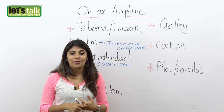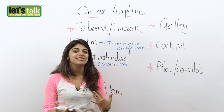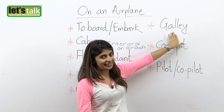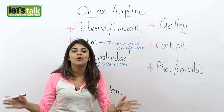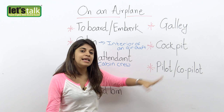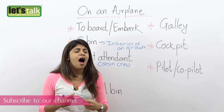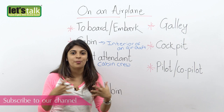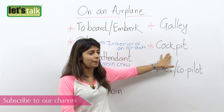We have galley. The galley is the place where all your meals are stored, and where the flight attendants prepare or heat the meals to be served to the passengers. Then we have cockpit. The cockpit is the most important part of the aircraft — it's the control room for the pilots. The pilot and co-pilot sit in the cockpit in order to control the aircraft. It's really interesting with all its bright displays and several buttons.